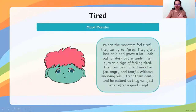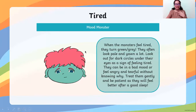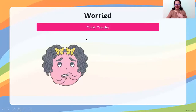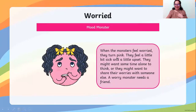Tired — when the monsters feel tired, they turn green or gray. They often look pale and yawn a lot; look for dark circles under their eyes as a sign of tiredness. They can be in a bad mood or feel angry and tearful without knowing why. Treat them gently and be patient — they will feel better after a good sleep. If you feel tired, you need some rest. Worried — when the monsters feel worried, they turn pink. They feel a little sick and a little upset. They might want time alone or to share their worries with someone else. A worried monster needs a friend.